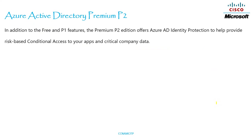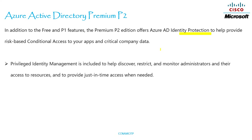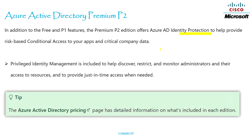Azure Active Directory Premium 2 — in addition to the Free and P1 features, the Premium 2 edition offers Azure AD Identity Protection to help provide risk-based Conditional Access to your apps and critical company data. Privileged Identity Management is also included to help discover, restrict, and monitor administrators and their access to resources, and to provide just-in-time access when needed.